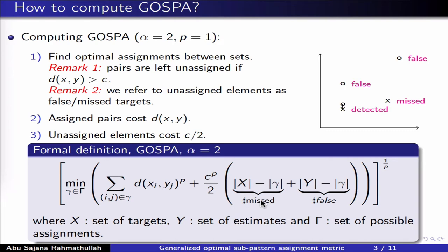This expression may look a bit complex, but it's not very complicated to understand. In the toy example, the set of assignments gamma only contains one pair, so the cardinality of gamma is 1. There are two targets present, so the cardinality of x is 2. The numbers are therefore 2 minus 1, which says there is only one missed target — the number of missed targets is simply the total number of targets minus the number of assigned targets. Similarly, there are 3 target estimates, so 3 minus 1 gives us 2 false targets.